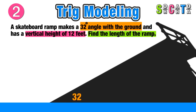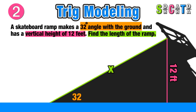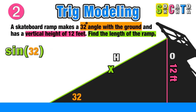Let's label our diagram. The angle between the ramp and the ground is 32 degrees, and the ramp has a vertical height of 12 feet. Our unknown x is going to be the length of the ramp — the hypotenuse of the triangle. We label the opposite and hypotenuse sides, which means we are going to use the sine function. So we have sine of 32 degrees equals 12 over x.